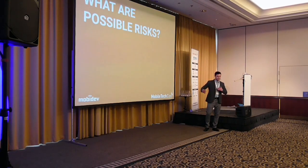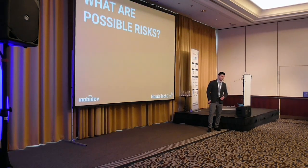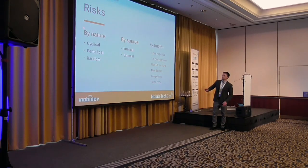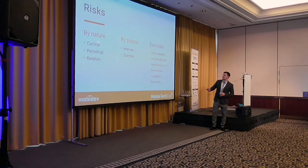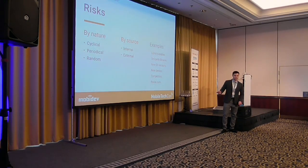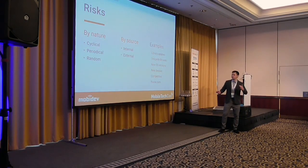Now let's discuss risks. The perfect timeline is ideal, but in real life we have risks. Risks can be divided by nature and by source. For example, library updates — a library update can break something — this is a periodical and external risk. A new operating system version and new devices is a cyclical risk in iOS but a periodical risk in Android.